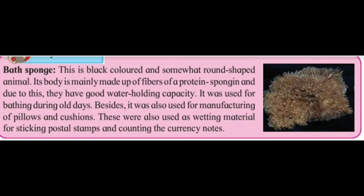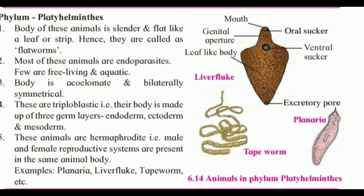Bath sponge, also called Euspongia sponge, is black colored and somewhat round shaped. Its body is mainly made up of fibers of the protein spongin, and due to this they have good water-holding capacity. It was used for bathing in old days. Besides, it was also used for manufacturing pillows and cushions, and as wetting material for sticking postal stamps and counting currency notes.